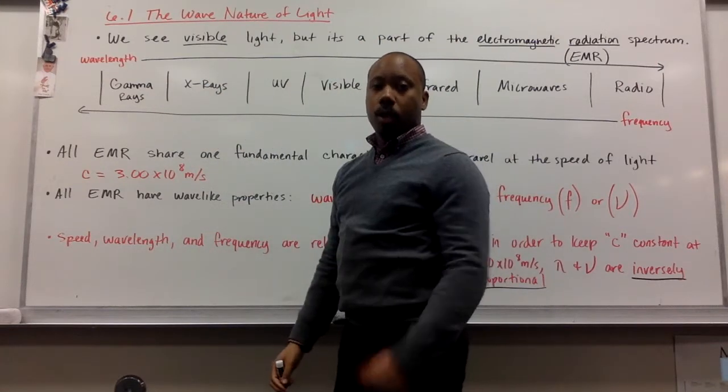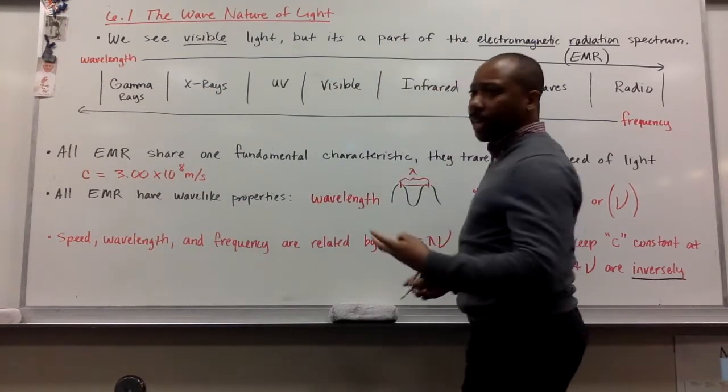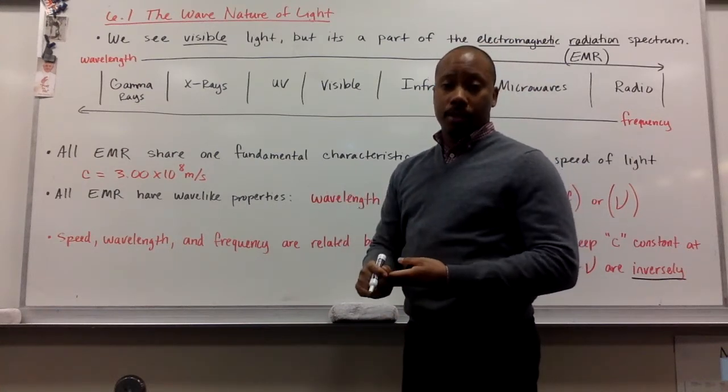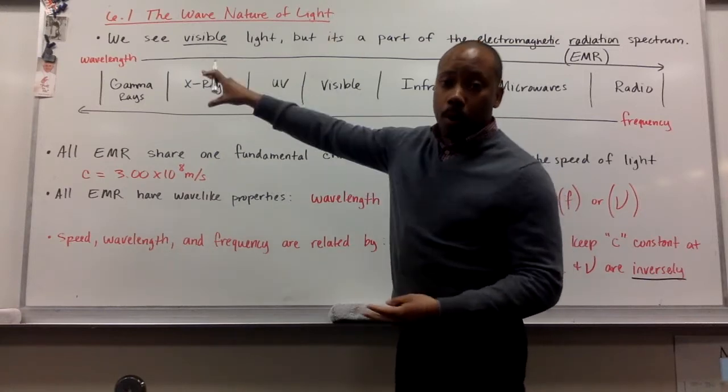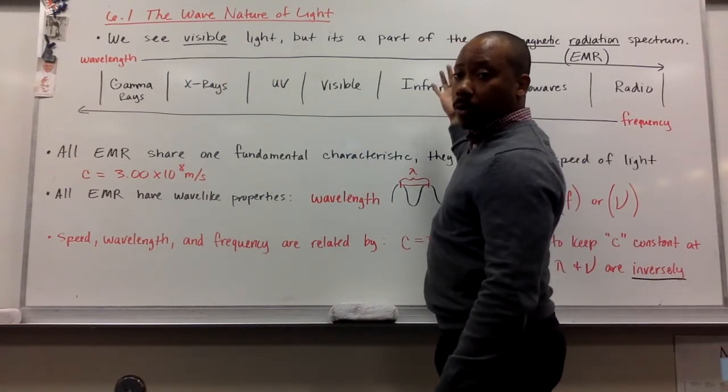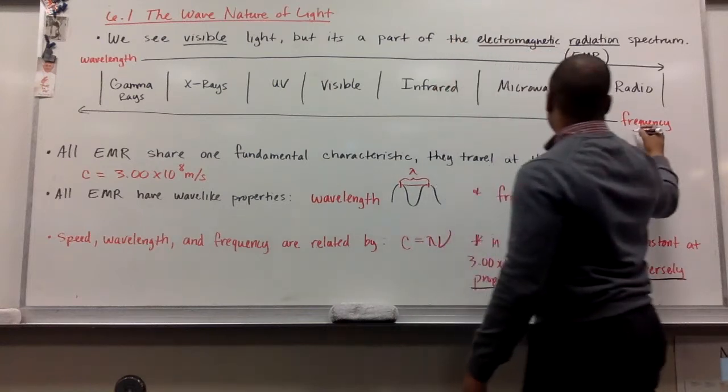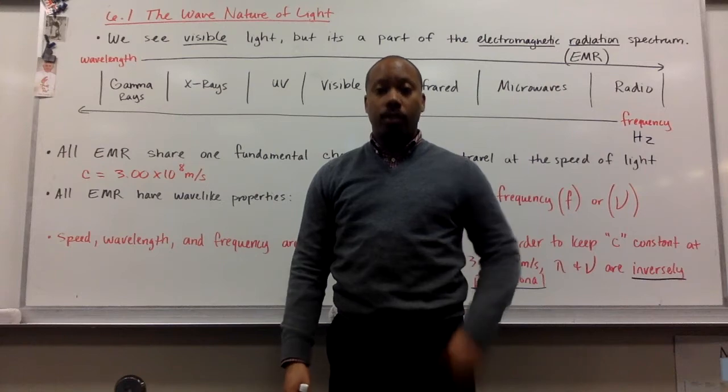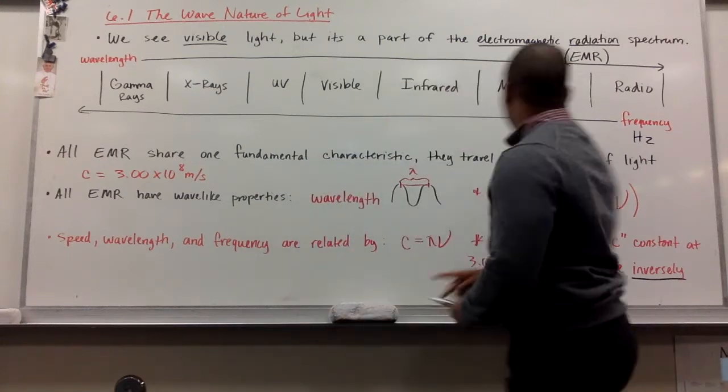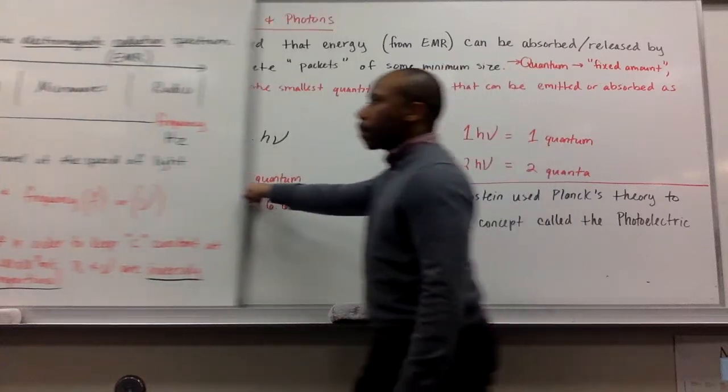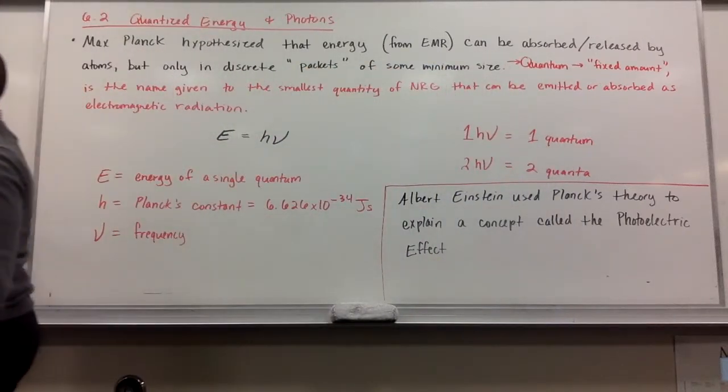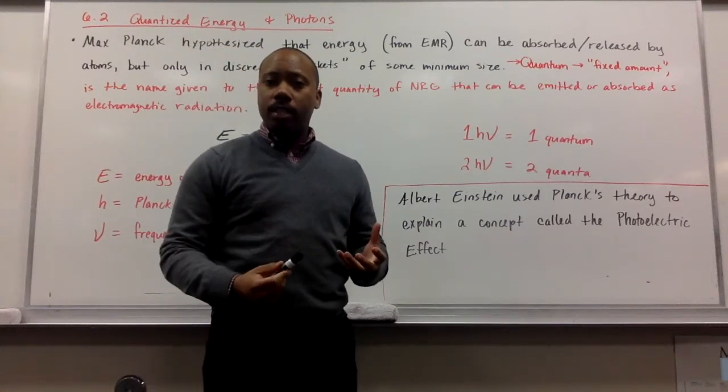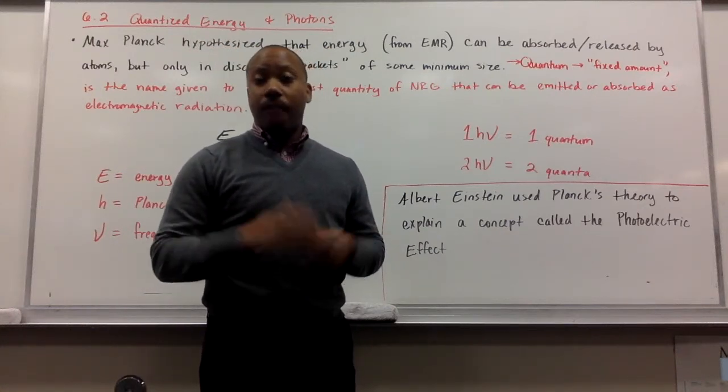Wavelength is measured generally in meters or nanometers or picometers or micrometers, depending on how small or large the wavelengths are. Frequency is generally measured in Hertz, which is waves per second, so one over seconds.